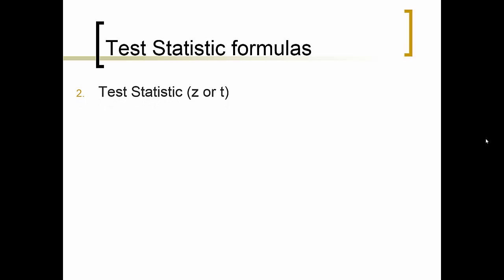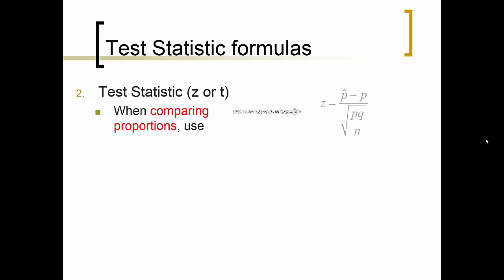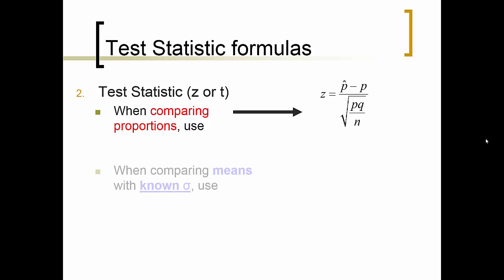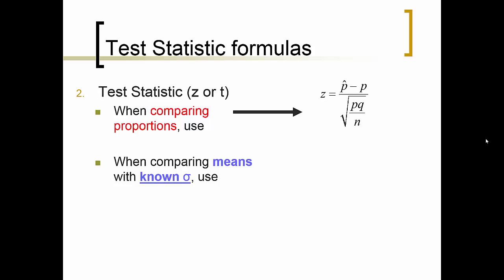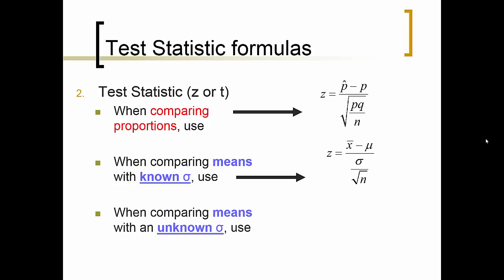The test statistic is Z or T. When comparing proportions, use Z equals P-hat minus P divided by the square root of P times Q divided by N. When comparing means with a known standard deviation sigma, use Z equals X-bar minus mu divided by sigma divided by the square root of N. When comparing means with an unknown standard deviation sigma, use T equals X-bar minus mu divided by S divided by the square root of N.